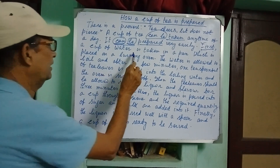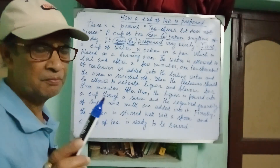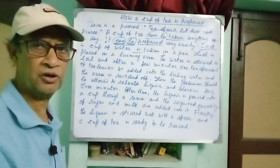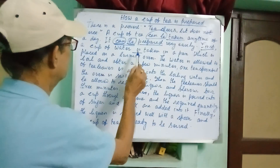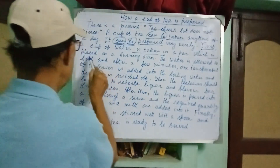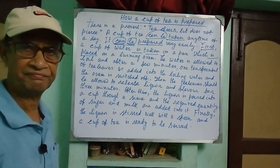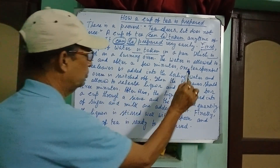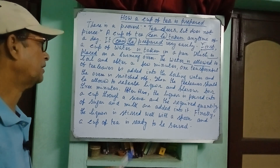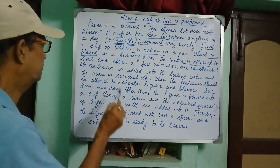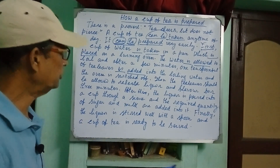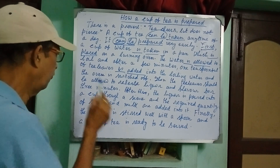First, a cup of water is taken. A cup of water is singular, third person singular number, so you use 'is.' A cup of water is taken in a pan which is placed on a burning oven. The water is allowed to boil. And after a few minutes, one teaspoonful of tea leaves is added into the boiling water, and the oven is switched off.